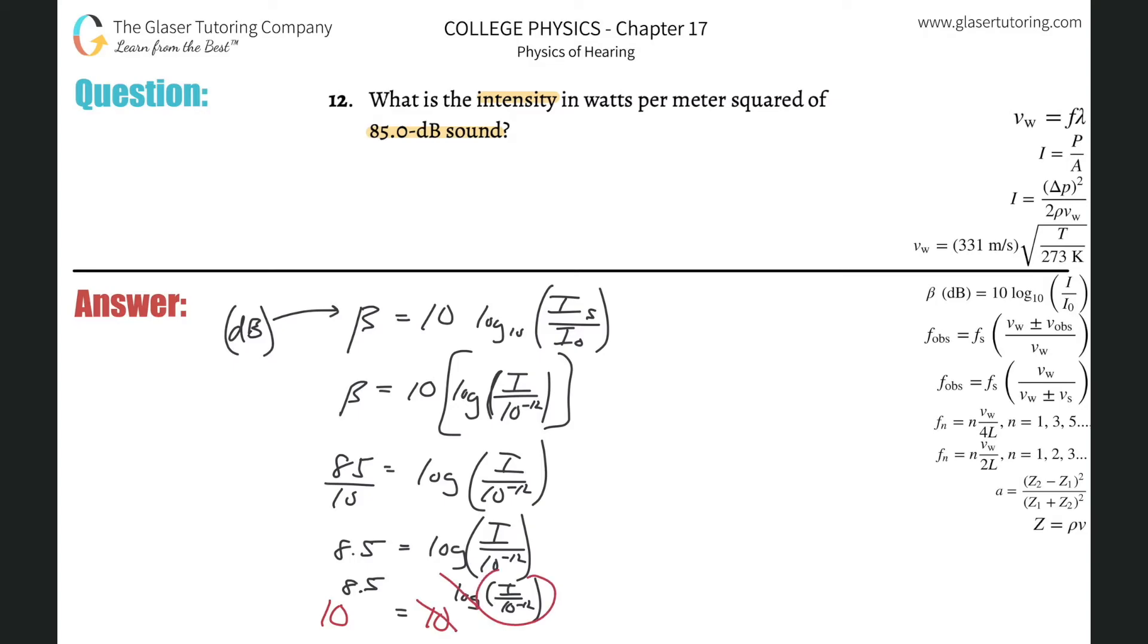So basically we have an equation now that says 10 raised to the 8.5 power is equal to I over 10 to the minus 12. And notice this is now a nice little equation. This is like over one. If you want to just find I, all you have to do is just simply cross multiply these two values.